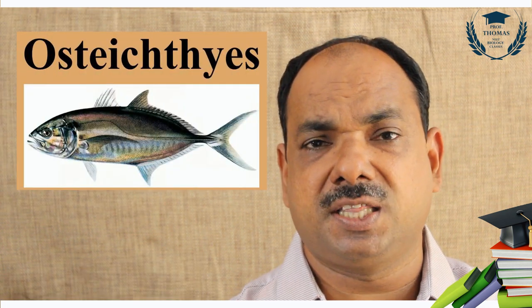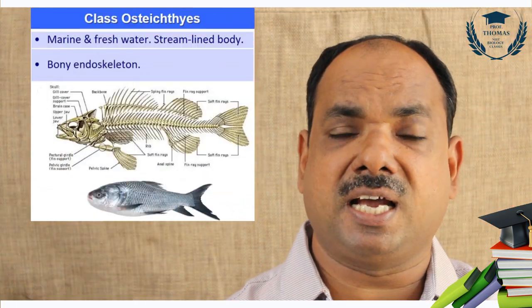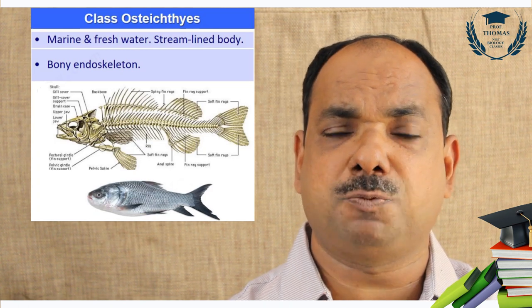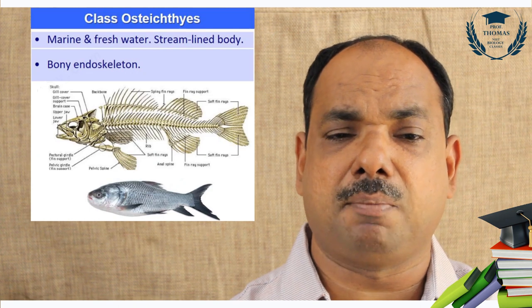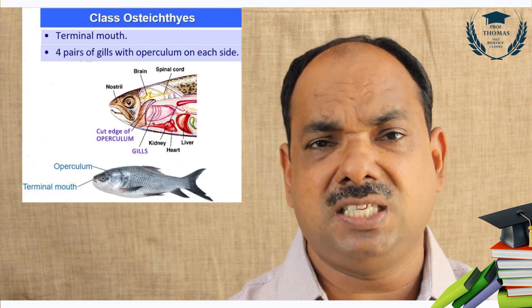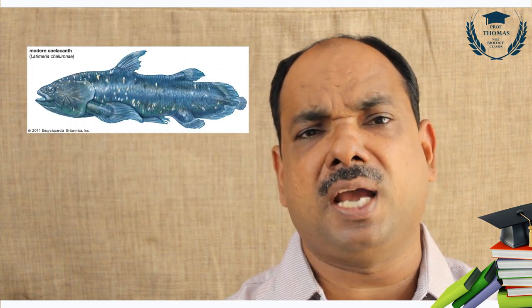Osteichthyes is the class of bony fishes. They can live in both marine and freshwater habitats. The body is spindle-shaped. Endoskeleton is made up of bones — streamlined body. They have four pairs of gills covered with the operculum. The mouth is terminal. The tail is heterocercal or homocercal — in homocercal tail, the two fin rays are equal.